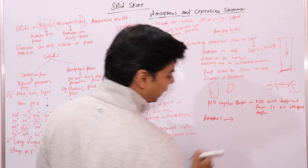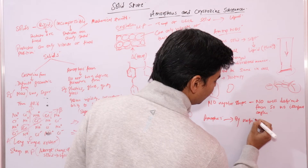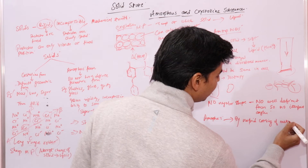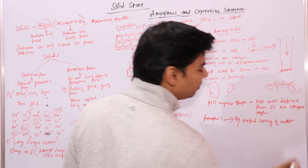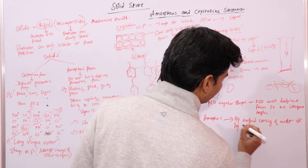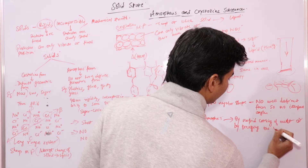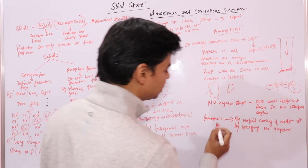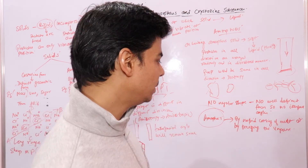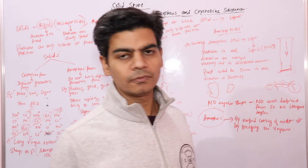Amorphous substances can be obtained by rapid cooling of a melt — when we say melt, we mean melting a material and then rapidly cooling it — or by freezing the vapors. If you freeze the vapors, the material will change into amorphous form. So any substance can be changed into amorphous form by these two ways: rapidly cooling the melt, or by freezing of vapors.